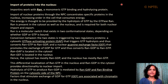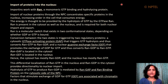The hydrolysis of GTP to produce RAN-GDP is mediated by RAN-GAP and RAN-binding protein on the cytosolic side of the nuclear pore complex. On the other hand, the factors that stimulate the exchange of GDP for GTP are associated with chromatin in the nucleus.